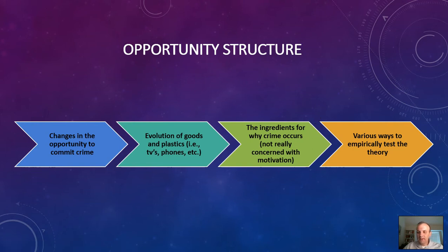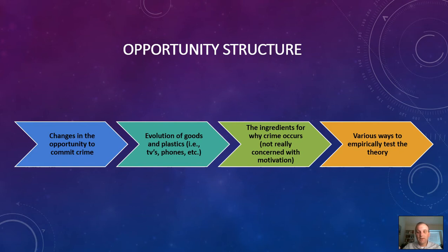This relates to the opportunity structure itself. For example, if you leave your wallet in a public restroom with nobody around and walk out, anybody who walks in has the opportunity to take it. There's likely no camera, no capable guardianship, the wallet is a suitable target, and the individual is a potential motivated offender. That increases the likelihood they'll actually take the wallet. You can see how the opportunity structure allows for criminal acts in some instances but not others.